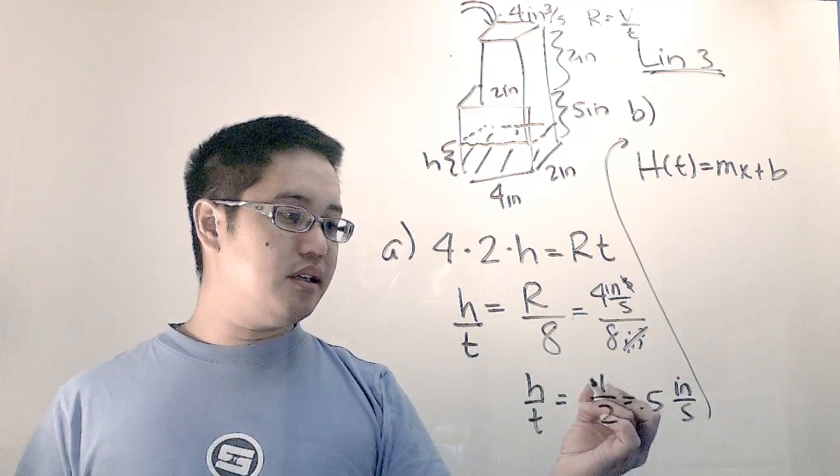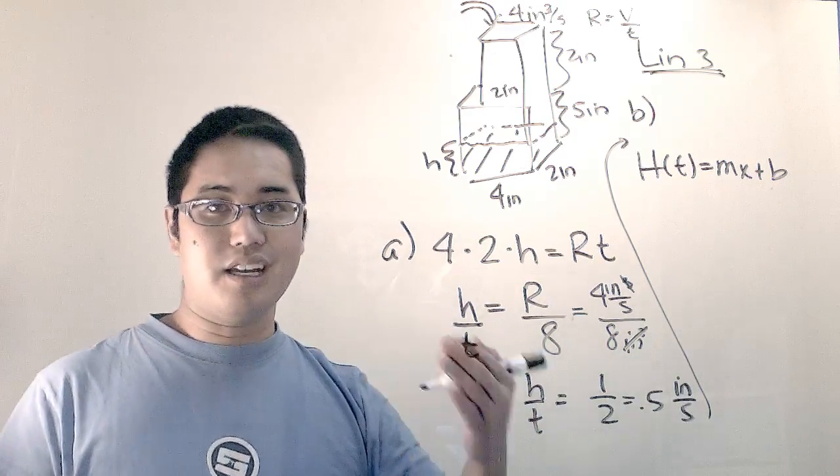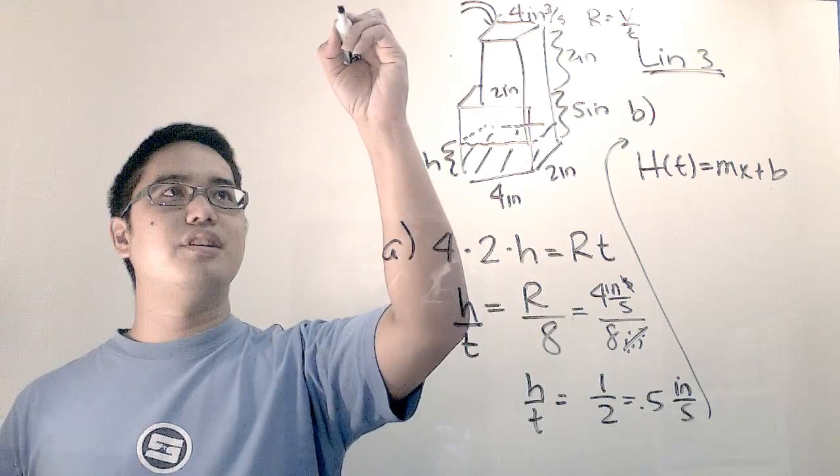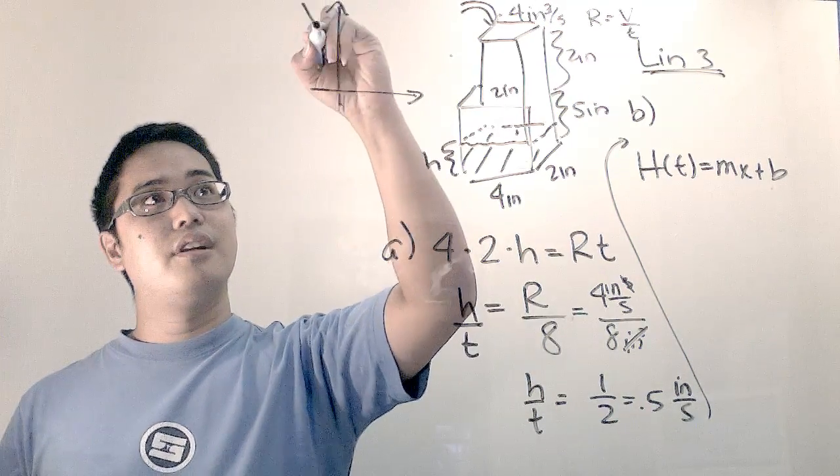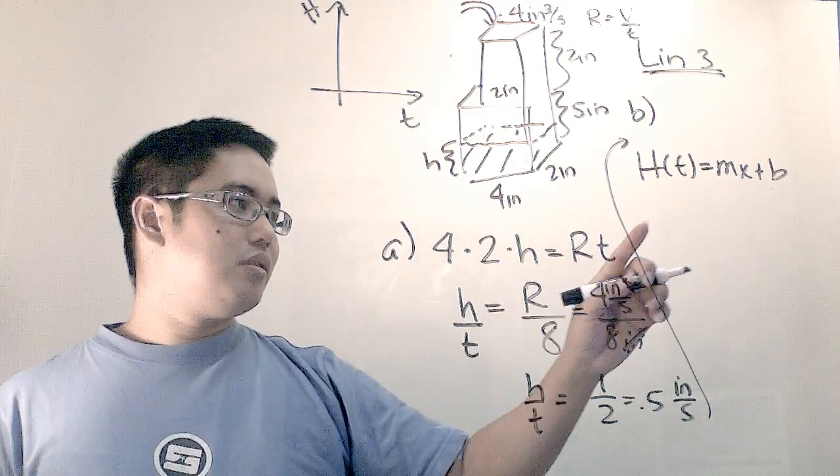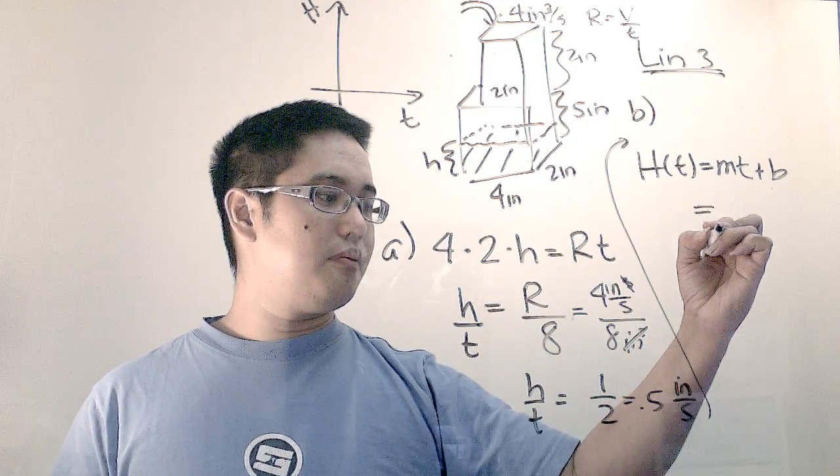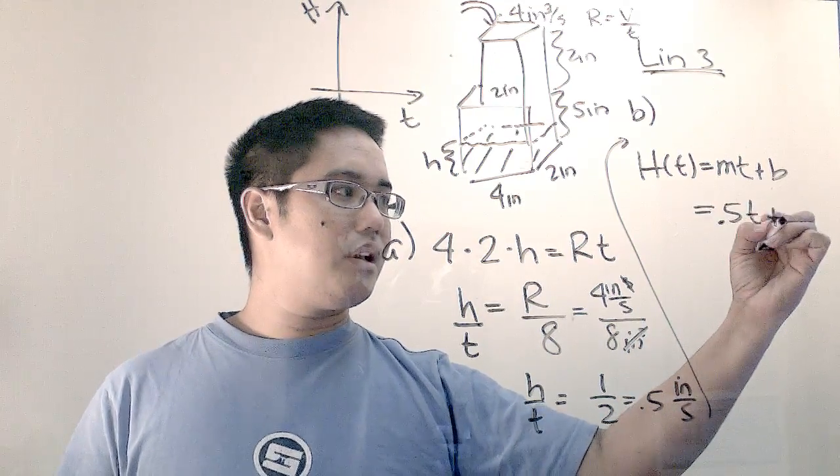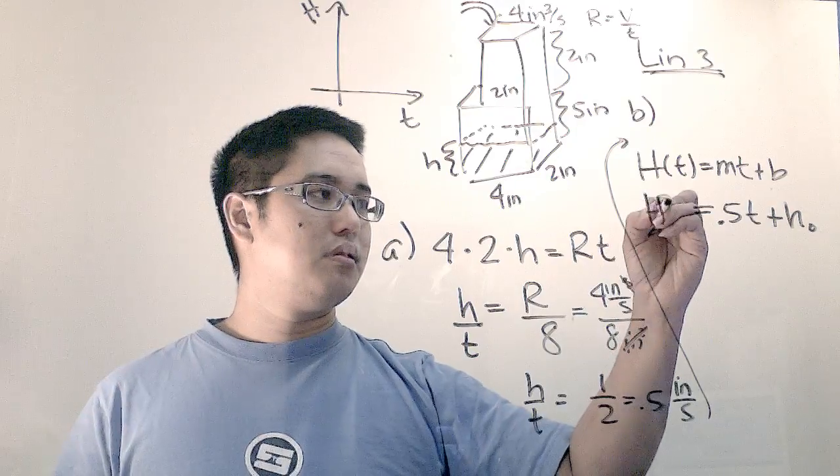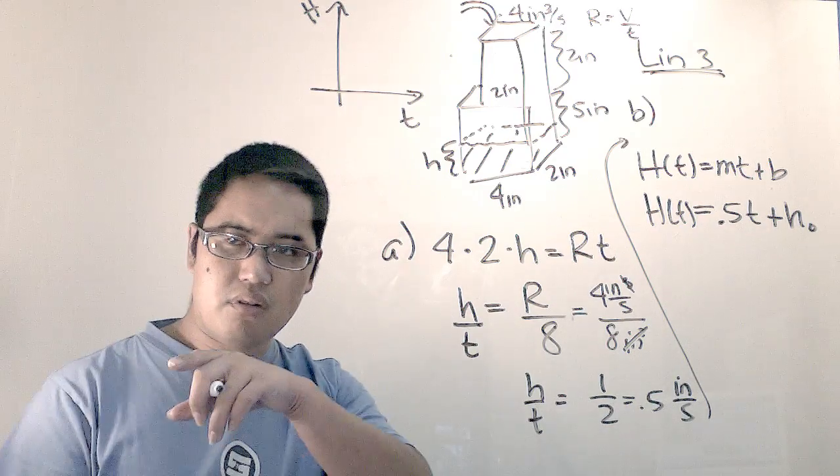So my m is actually my height over time. And my x, well, that's actually... It's not an x-axis. We're talking about the time axis in this case. Because, I guess the way I would kind of envision it is if I were to graph this, I would graph H as a function of time. How high does it go after how many seconds? So I should change this to a t. So I would say H of t is equal to 0.5t plus H zero. Does that make sense to you?